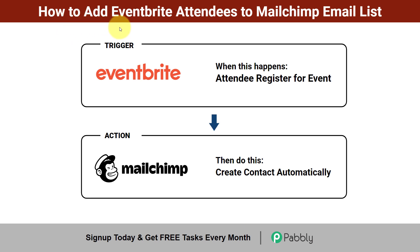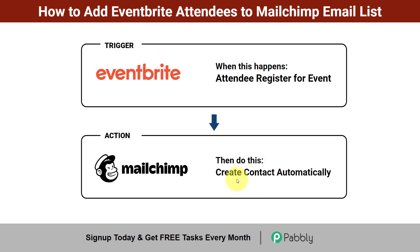In this video I'll show you how to add Eventbrite attendees to a Mailchimp email list automatically. The idea is that as soon as an attendee registers for an event in Eventbrite, I am going to automatically add that same person into Mailchimp and create a contact, so I can sync all attendees with Mailchimp in real time.